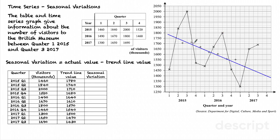These points are a four-point moving average, and that's plotted in the middle of the four points which have been averaged. So here it's in the middle of the first four points, and this is in the middle of points two, three, four, and Q1 of the next year. The blue line is the trend line and we can see here that we have a downward trend.